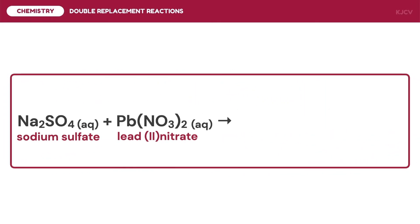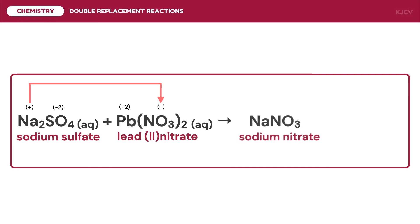For the second example, we have the reaction between sodium sulfate and lead(II) nitrate. For sodium sulfate, sodium has a charge of positive 1 and sulfate has a charge of negative 2. For lead(II) nitrate, lead has a charge of positive 2 and nitrate has a charge of negative 1. To predict the products of this reaction, sodium will bond with nitrate since their charges have different signs. Doing a criss-cross of their charges, we have sodium nitrate.